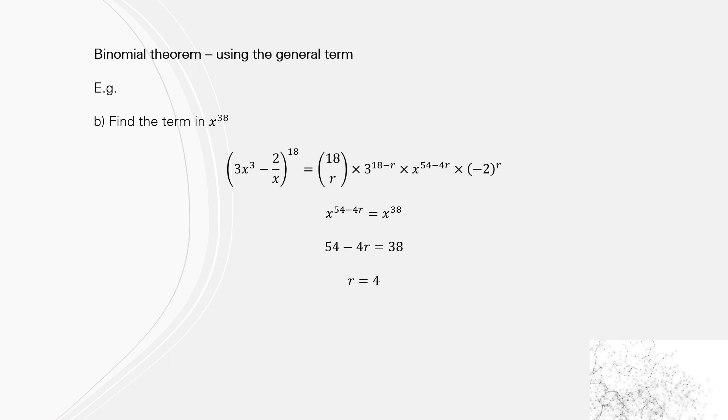So we want x^38. Focus on the x part because we're trying to find what r value works for this. So you get 54-4r equals 38, and when you solve that you get r equals 4. So we're just going to replace the r with 4.